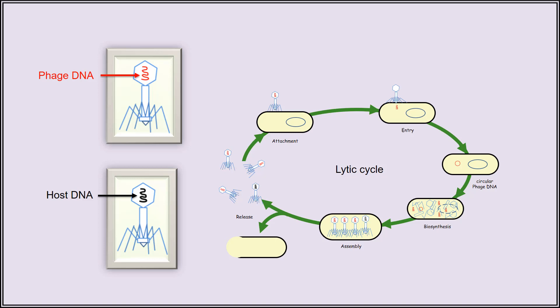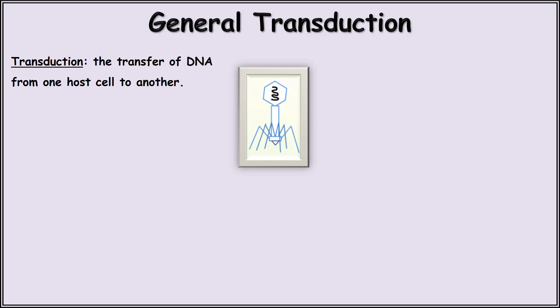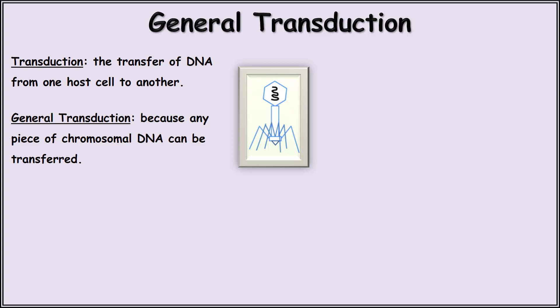Because some of the newly formed bacteriophage particles will contain bacterial DNA packaged in their capsid heads instead of phage DNA, as shown here, this will lead to a form of host DNA transfer that we call general transduction. The term transduction simply means the transfer of DNA from one host to another. This form of transduction is called general transduction because any pieces of the host's fragmented DNA could have been packaged inside the newly made phage — thus, it is not specific to any given region of the host DNA. When this phage eventually attaches and injects its DNA load into a new host, it will complete the process of general transduction.